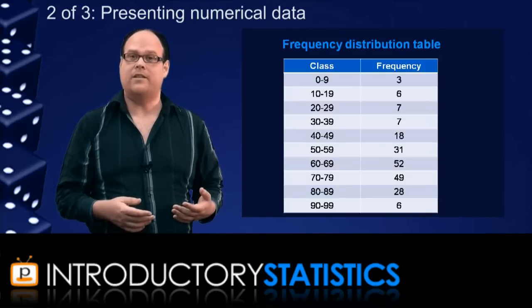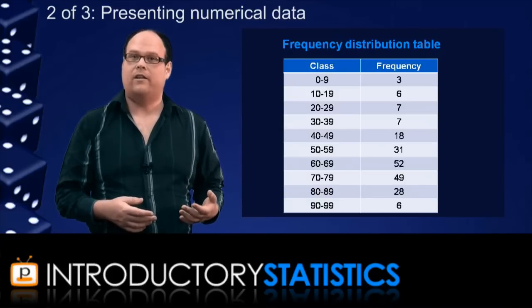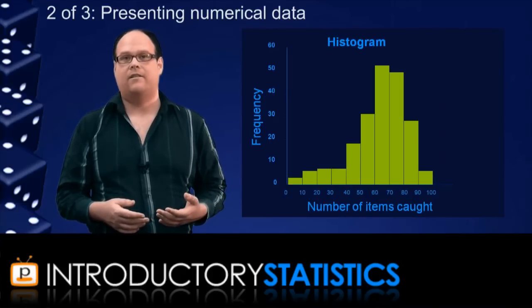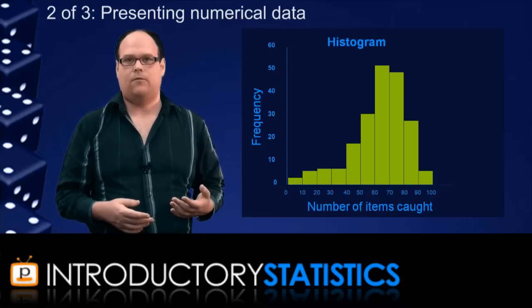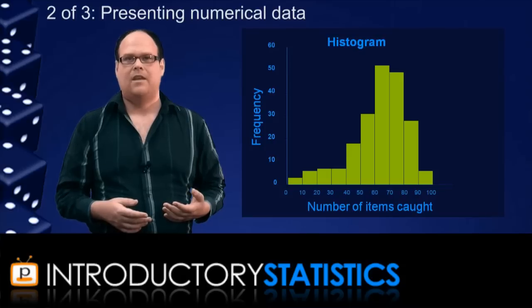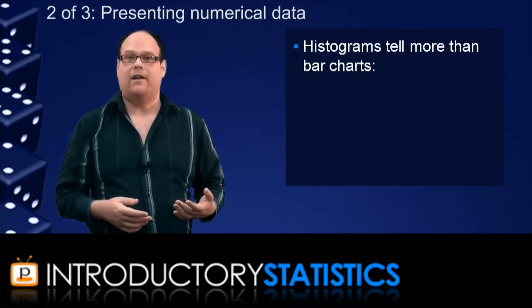This is a frequency distribution table. Now, like with the categorical data, we can convert these numbers into a chart, and for numerical data, we call the chart a histogram. So, here's the histogram for the dexterity study. It's a lot like a bar chart, but due to the fact that numerical data is more structured than categorical data, we can use the histogram to tell us a lot more about the data.